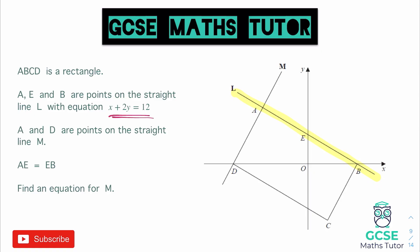A and D are points on the straight line M, so we've got another line there, M, which we can see, and it says AE and EB are equal, so that means from here to here and if I swap colours from there to there, they're equal, so E is the midpoint of AB. Find an equation for M.